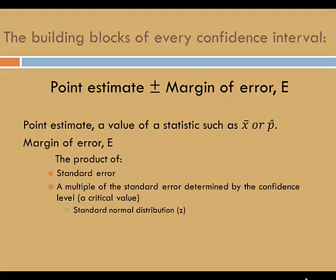The critical value may be a z-score from the standard normal distribution, or a t-score from the student's t-distribution, or a value from some other distribution, such as the F-distribution or chi-square distribution.